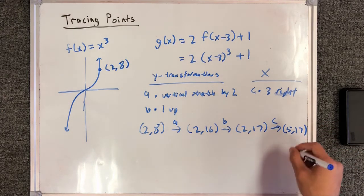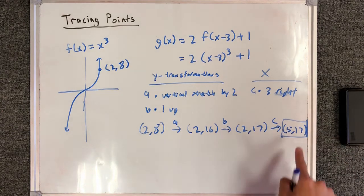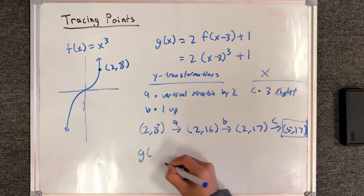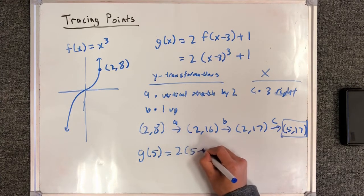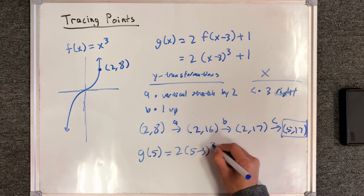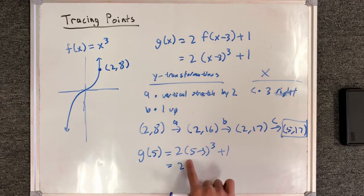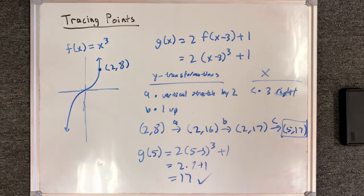Let's double check that this is indeed traced correctly. I'll take this point and plug it into g of x. So g of 5 will be equal to 2 times 5 minus 3 cubed plus 1, which is equal to 2 times 2 cubed, which is 8, plus 1 — and this is indeed 17. So we have checked that our answer is correct.